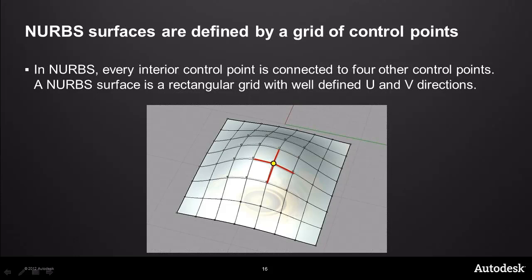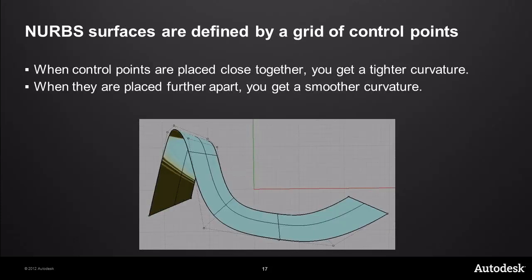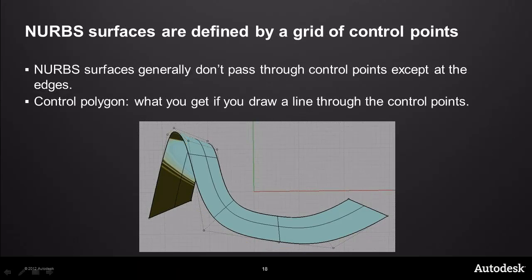Taking these 2D concepts into three dimensions: NURBS surfaces are defined by a grid of control points with a well-defined U and V direction. We say the topology is rectangular — a NURBS surface always has a rectangular orientation of its grid. All we're doing is extending those 2D concepts into 3D. When control points are placed close together, you get tighter curvature; when they're farther apart, you get smoother curvature. Just as with curves, they typically don't pass through control points except at the edges. And we have the control polygon or cage, which is the polyline connection of all the control points.